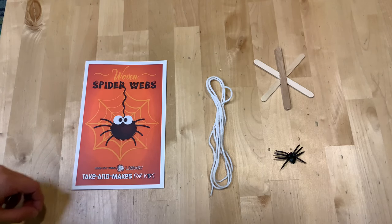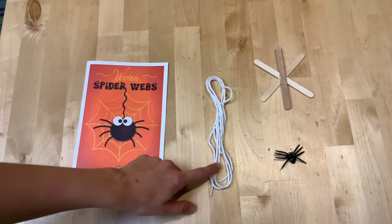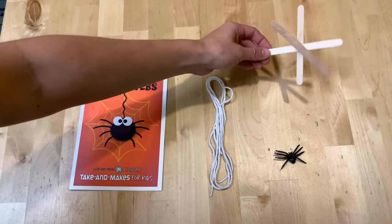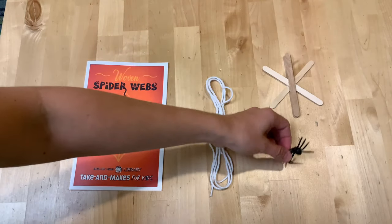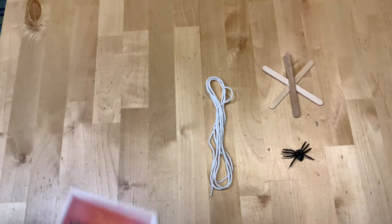In your craft kit, you should have instructions, a long piece of string, a craft stick star, and a little spider. Let's get started.